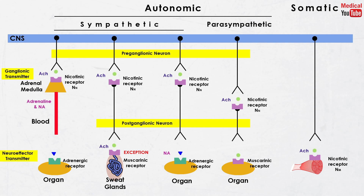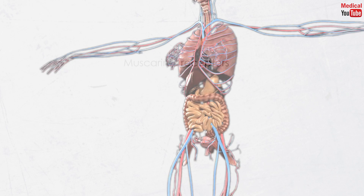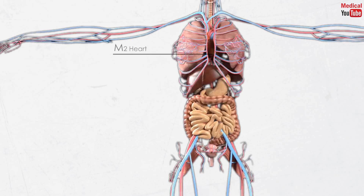Muscarinic receptors are subdivided into multiple receptors, but only M1, M2, and M3 have been functionally characterized. M1 is located in the parietal cells of the stomach; when activated, it increases the production of HCl. M2 is located in the heart; when activated, it decreases the heart rate, known as bradycardia or negative chronotropic effect, and decreases the force of contraction, known as negative inotropic effect.